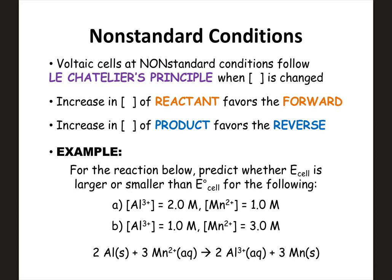For the reaction below, predict whether the E for the cell — notice it's not E naught because we're not at standard conditions — is larger or smaller than E naught. E naught would be when we're at one molar. For condition A, the Al³⁺ is two molar — not standard — and the Mn²⁺ is one molar, which is standard. So look at the actual reaction: the Al³⁺ is on the product side, and it's at two molar.